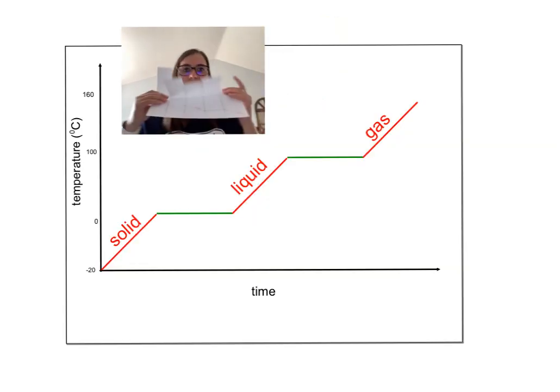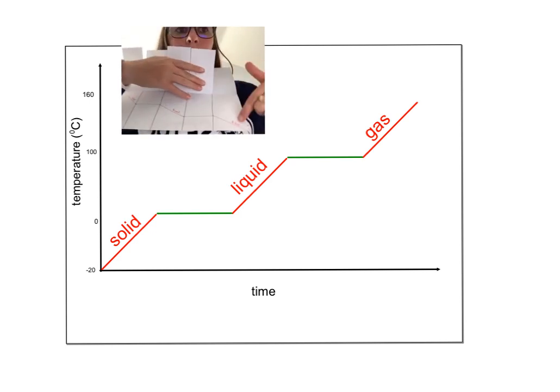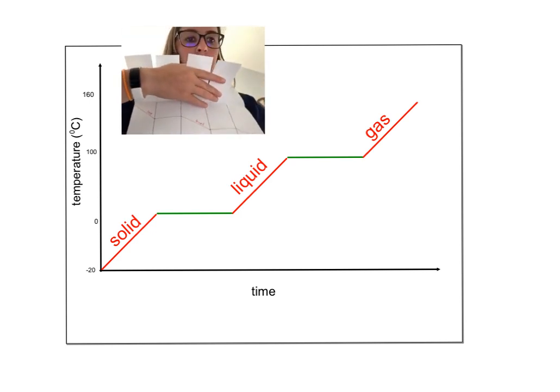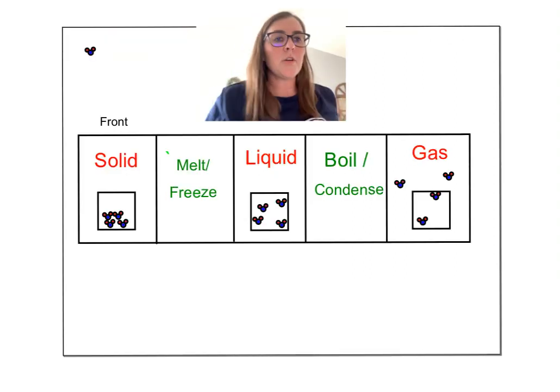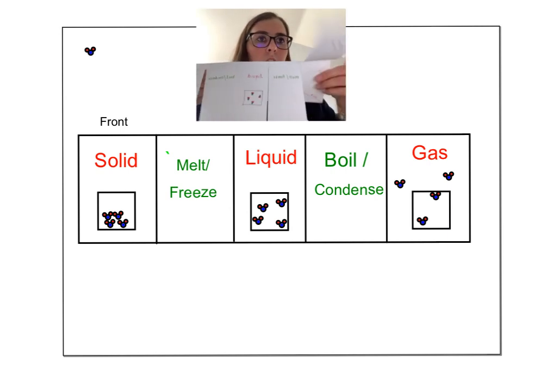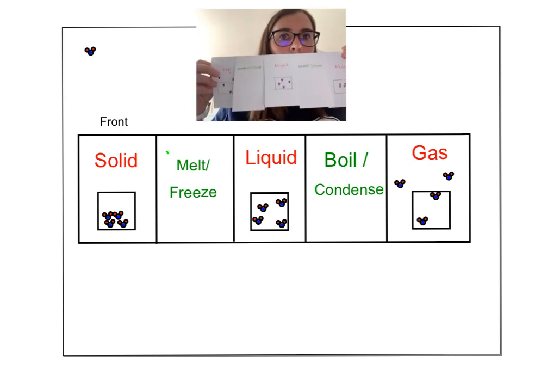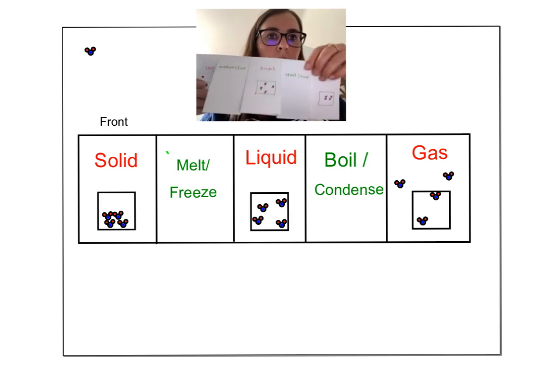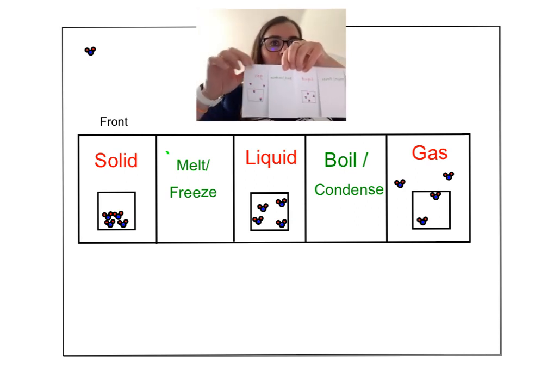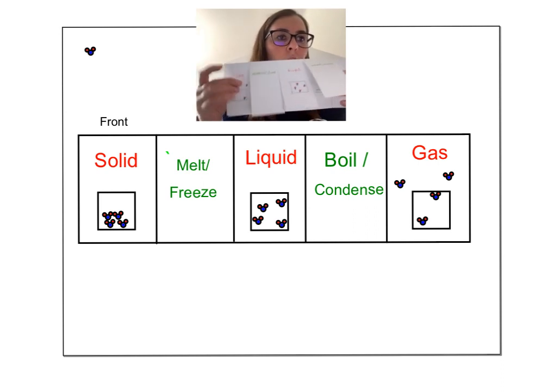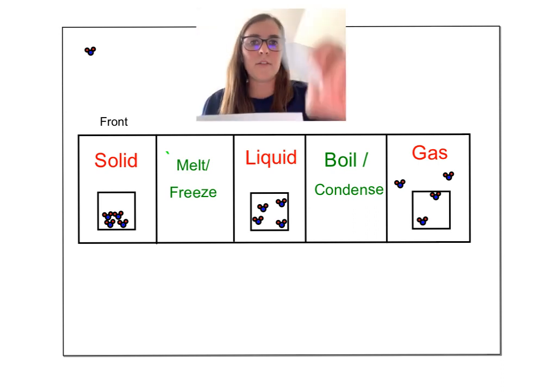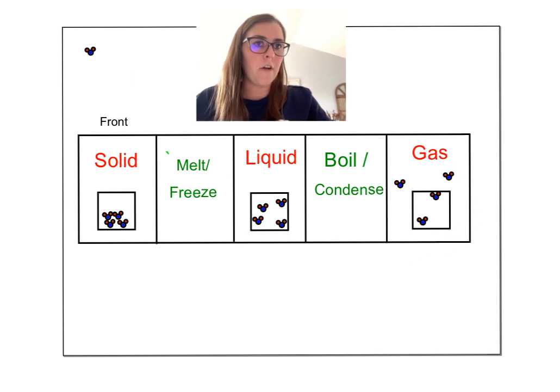Now you're going to label the red lines with the states of matter - solid, liquid, and gas. And add your flat line phase changes, melting and boiling. Back to the front, the part that you cut, we want to label so you know what's inside. I labeled solid, then melting and freezing, liquid, boiling and condensing, and gas. We're also going to draw particle pictures on the states of matter. Remember solids are close, a little more space between the liquids, and the gases are far apart.